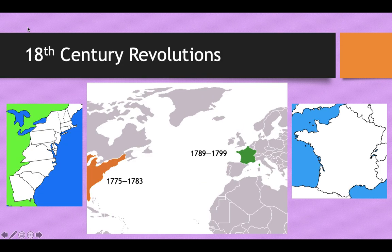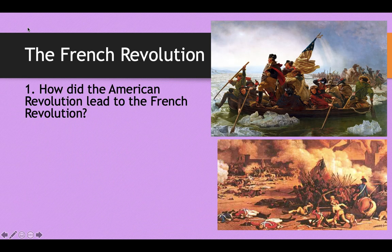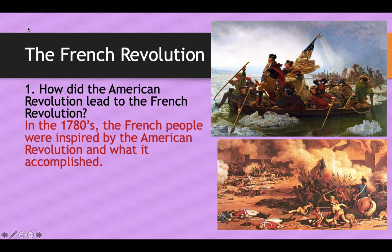Now we're going to talk about the French Revolution. The American Revolution took place from 1775 to 1783. As you see on the map there, the French Revolution began just six years after the American Revolution ended. And in a lot of ways, the French Revolution was inspired by the American Revolution. So how did the American Revolution lead to the French one?